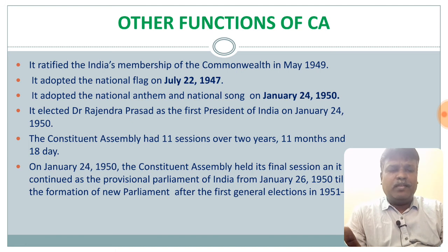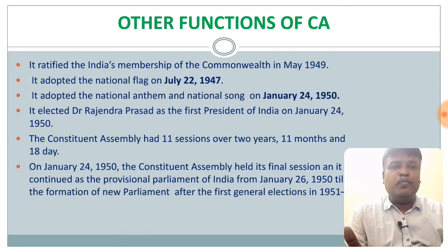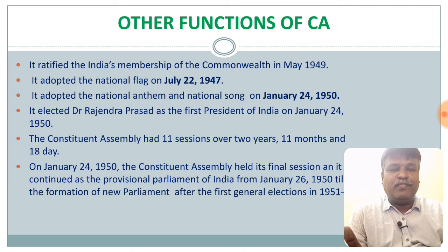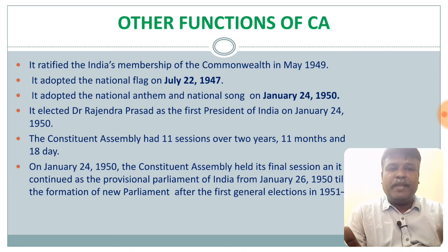After January 26, 1950, the Constituent Assembly continued as the Provisional Parliament until the formation of the new parliament after the first general election in 1951–52.